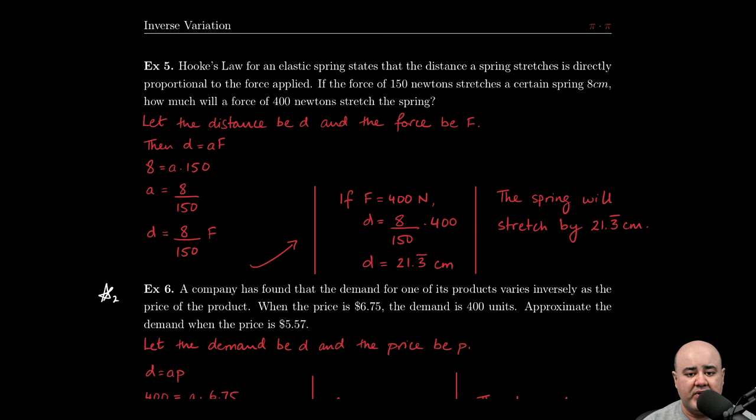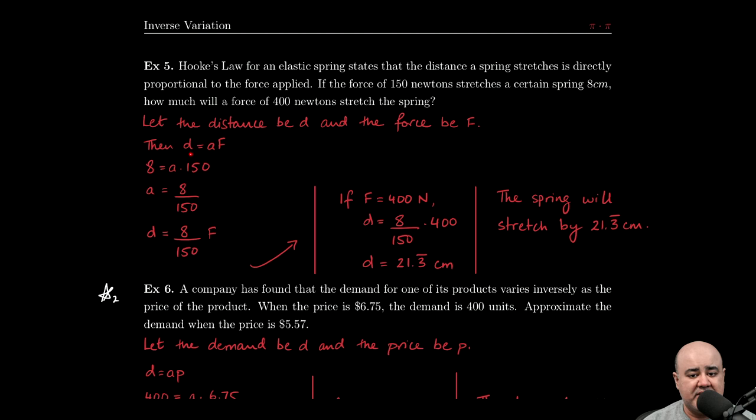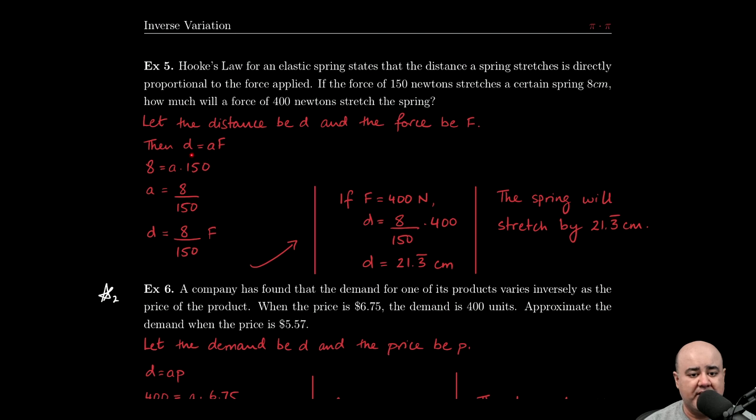Let's say we let our distance be lowercase d and the force be capital F. I'm borrowing these variables from physics—this is what your physics teacher will use as well. We know that the distance the spring stretches is directly proportional to the force applied, so we know that d is going to be equal to a, the constant of proportionality or the constant of variation, times the force.